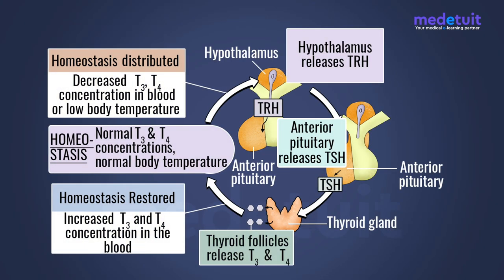The thyroid hormone is one very important hormone responsible for the maintenance of many body functions. This thyroid hormone is regulated through an efficient negative feedback mechanism. As seen in the frame, there is an axis called the hypothalamo-hypophysial thyroid axis — a long axis of operation starting from the brain's hypothalamic nuclei, then below that the hypophysis, otherwise called the pituitary gland.